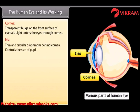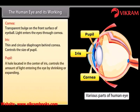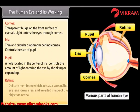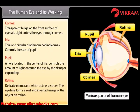Iris — it is a thin and circular diaphragm behind the cornea which controls the size of the pupil. Pupil — it is a hole in the center of iris that appears black and controls the amount of light entering the eyes by shrinking or expanding. Retina — it is a delicate membrane which acts as a screen. The eye lens forms a real and inverted image of the object on retina.